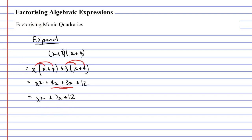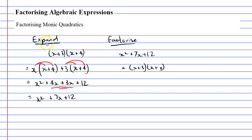If we know that expanding this expression results in the monic quadratic x squared plus 7x plus 12, then if we were to factorize x squared plus 7x plus 12, we would get x plus 3 times x plus 4. That's easy to factorize when you've got the answer in front of you. So how do we factorize when we don't? Let's look at our expansion and spot the shortcut.